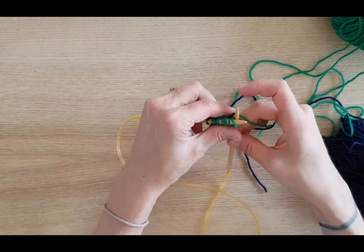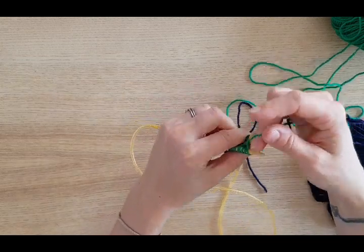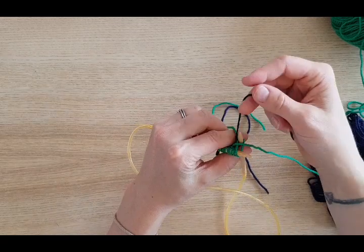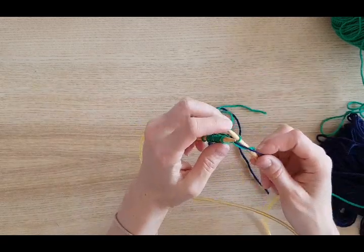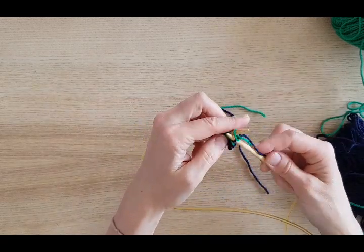So again, I'm going to use that intarsia join. So I'm going to wrap first with my color B yarn. Then I'm going to take my color A yarn and actually knit with it without pulling that color B yarn through.